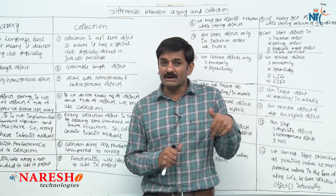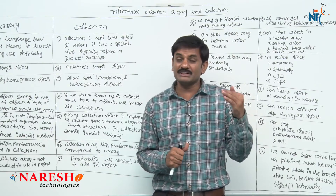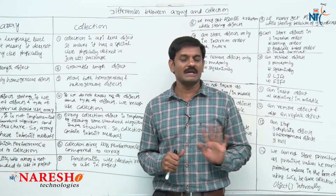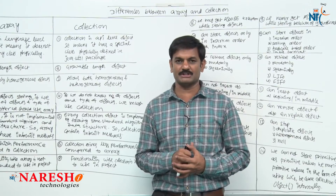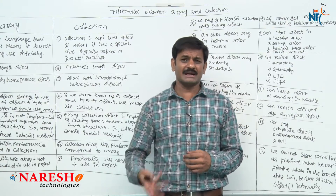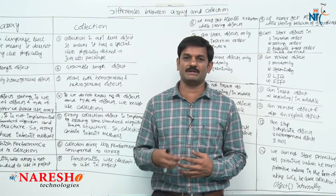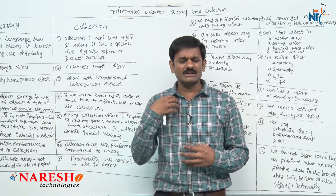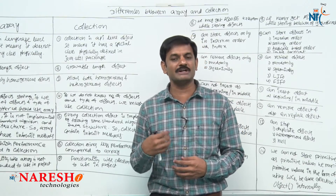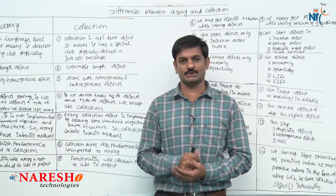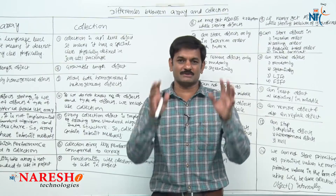Seventh difference — functionality: because there are no proper methods available in array, array is not recommended to use in a project from a functionality standpoint. Whereas collection contains proper methods like add, retrieve, remove, insert — whatever operations you want to perform, we have proper methods. So functionality-wise, collection is good to use. These are the 7 important differences listed.